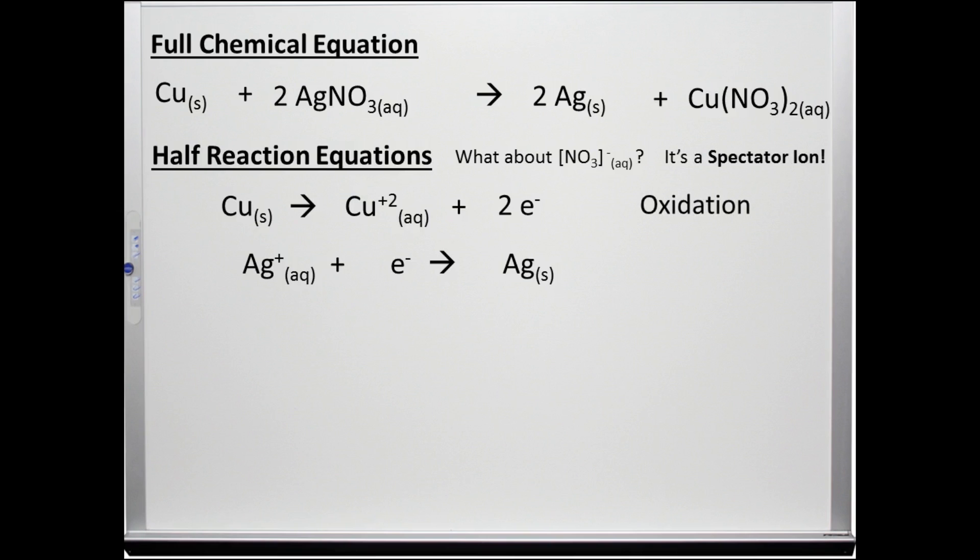The loss of an electron is called an oxidation while the gain of an electron is called a reduction. By multiplying the molar coefficients of the half-reactions, we can balance the number of electrons lost to the number of electrons gained.